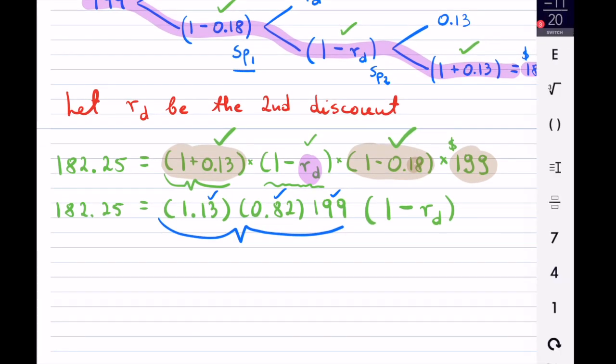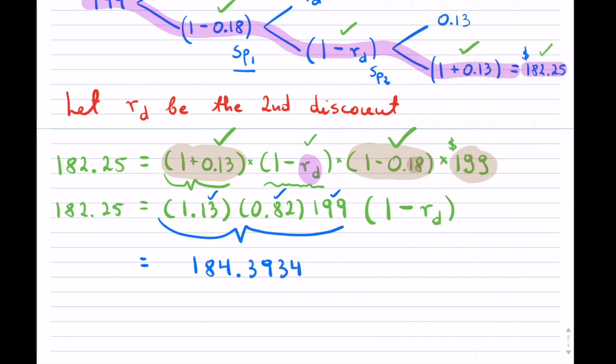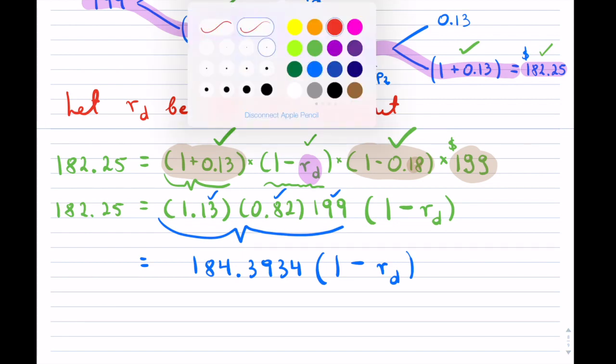So let me do that. So I have 1.13 times 0.82 times 199. And that gives me 184.3934.